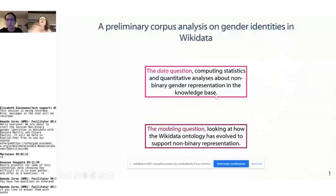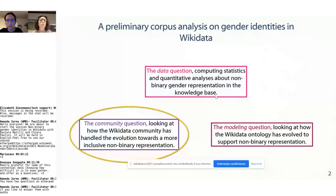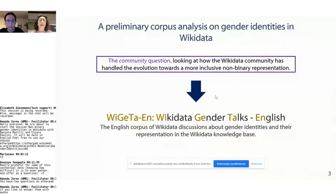I'm going to present a part of the preliminary corpus analysis on gender identities in Wikidata. As Daniele introduced, they answered the data questions and the modeling question. I'm going to give you a glimpse of how we try to answer the community question — how the Wikidata community has handled the evolution toward a more inclusive non-binary representation. For a corpus analysis, we need a corpus.